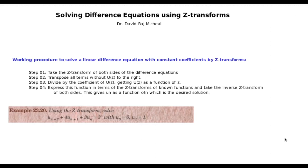Hi everyone. In this video, we'll see how to solve difference equations using Z-transformation. I have a working procedure to solve a linear difference equation with constant coefficient by Z-transformation. You already know what Z-transformation is, so it should not be a difficult topic. The first step is to take the Z-transform of both sides of the difference equation, transpose them, divide by the coefficient of U(Z), get U(Z) as a function of Z, then take the inverse Z-transform to get the answer. It is exactly the same as solving differential equations using Laplace transformation.